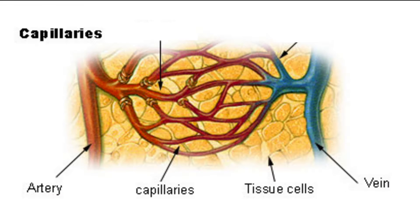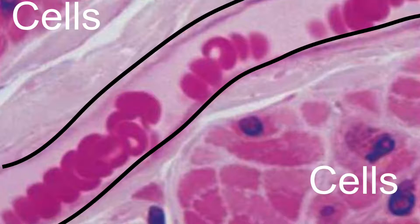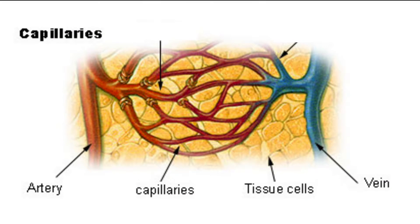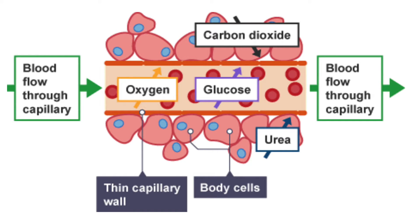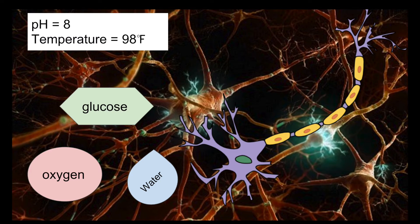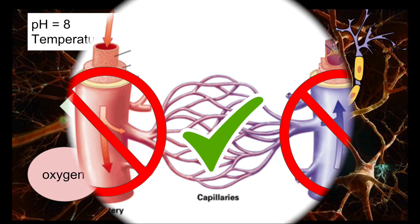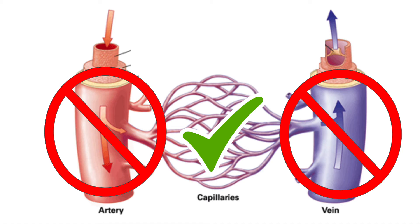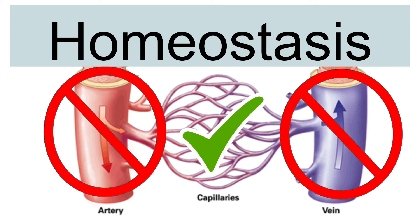This is where capillaries come in. Capillaries are thin blood vessels that connect between arteries and veins. They are so small that they can fit between small groups of cells. All cells have access to a capillary. Blood flows from the arteries to the veins via the capillaries, allowing cells to get the materials that they need and deposit waste that they don't need back into the blood. Without the capillaries, cells wouldn't be able to directly get the materials they need to maintain their environment. Therefore, capillaries are essential to maintaining homeostasis.